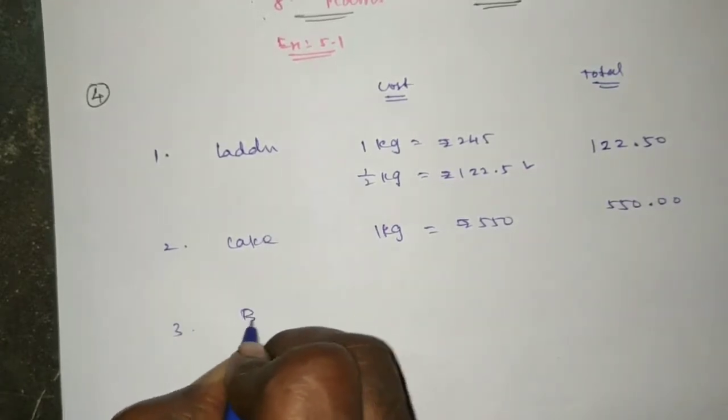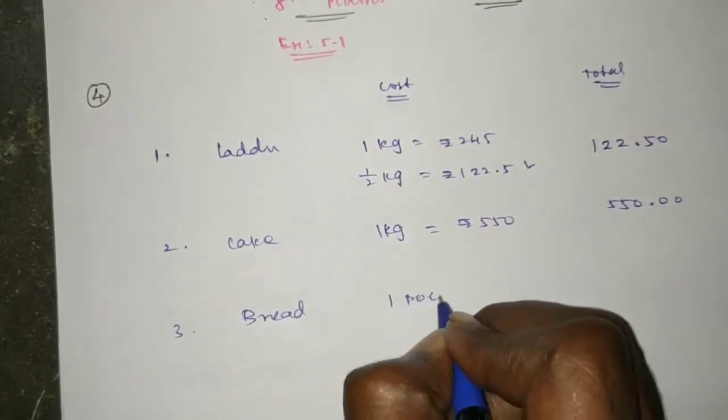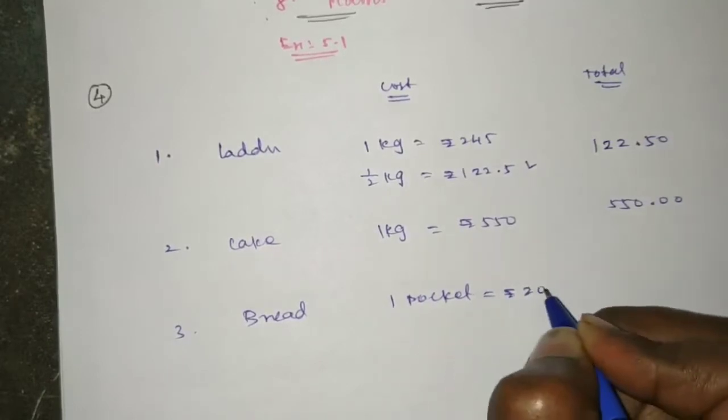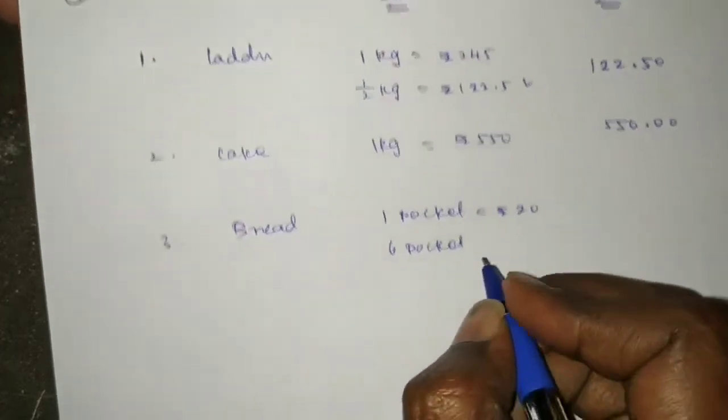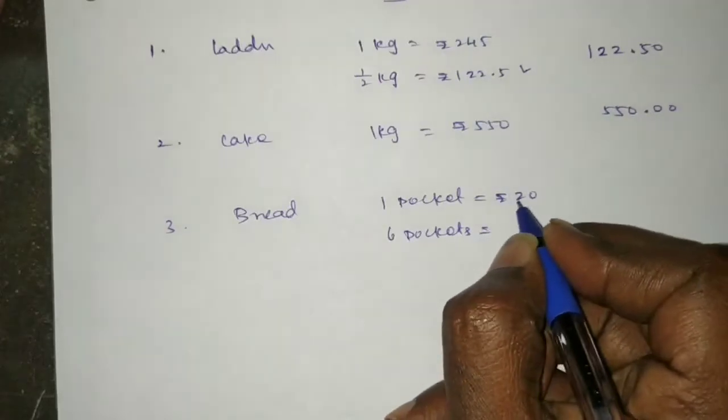Next comes bread. Bread is 20 rupees per packet. For 6 packets, that's 6 times 20 equals 120 rupees.